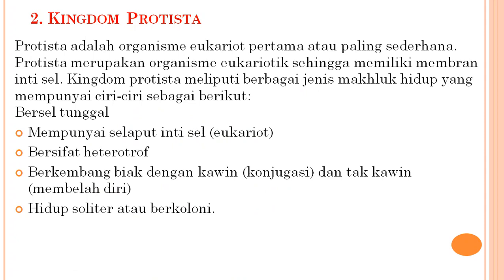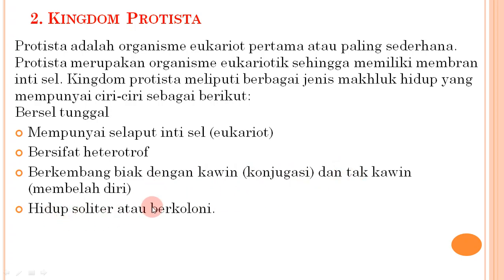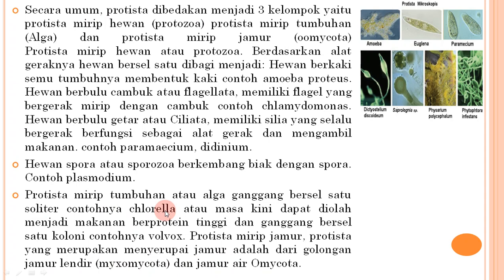Selanjutnya kingdom Protista. Protista adalah organisme eukaryot pertama atau paling sederhana, memiliki membran inti sel. Kingdom Protista meliputi makhluk hidup dengan ciri-ciri: bersel tunggal, mempunyai selaput inti sel (eukaryot), bersifat heterotrop, berkembang biak dengan kawin (konjugasi) dan tak kawin (membelah diri), hidup soliter atau berkoloni.